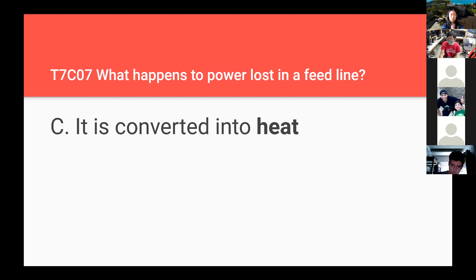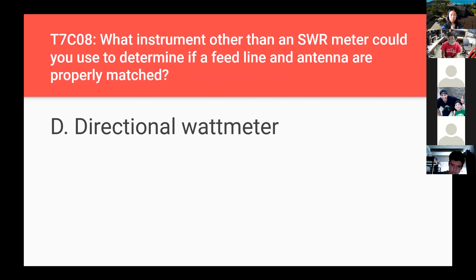What happens to power loss in the feed line? It is converted into heat. What instrument other than an SWR meter could you use to determine if a feed line and antenna are properly matched? A directional watt meter — you can see how much power is being sent out and whether any is reflected, ensuring all the power from your amplifier is being absorbed through the antenna.